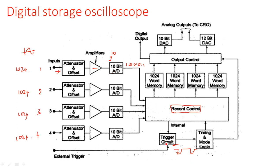The trigger circuit wakes up the timing and mode logic, which starts the recording process based on the digital data applied. Each channel has 1024 bits of memory, and the 10-bit ADC — storing 2 to the power 10 values — converts analog data into digital data consisting of 10 digits. This recorded data is reverted back and displayed on the CRT screen when required.